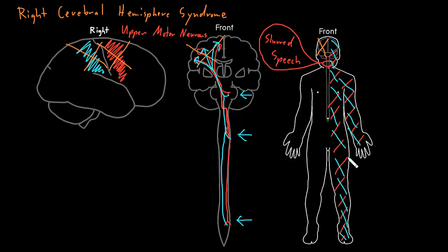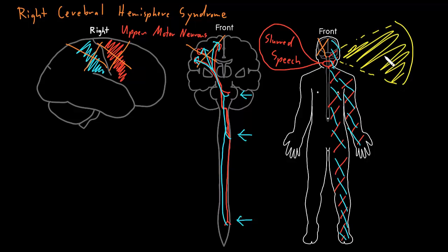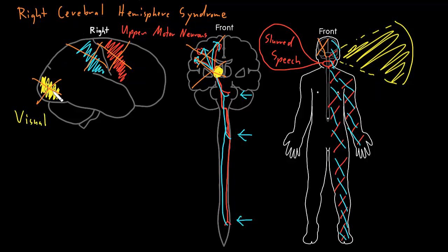The same is true with vision. Visual information coming in from the person's left side travels over to the right cerebral hemisphere and ends up in a particular area of the cerebral cortex for further processing. If those axons or that cortical area are affected, a person often has abnormalities of vision off to their left side.